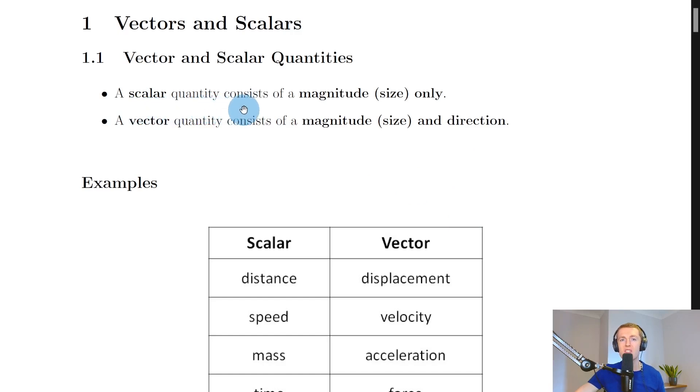So a scalar quantity, first of all, consists of a magnitude or a size only. So for example, if you were thinking about the scalar distance, then you could say that the total distance travelled by a car was say 5km, and that 5km with the number and the unit would make up your magnitude or your size.